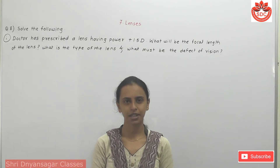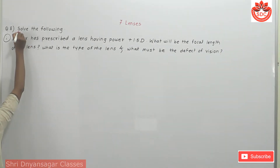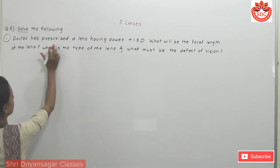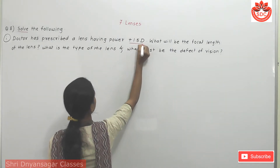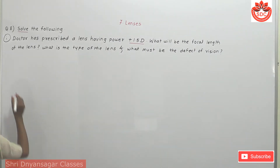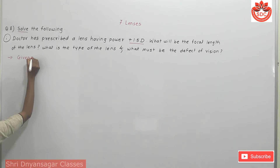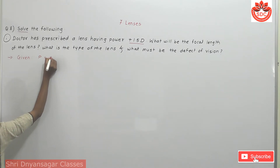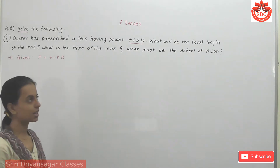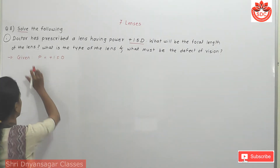Question number 8. Solve the following example. The first question: a doctor has prescribed a lens having power plus 1.5D. Given P is equal to plus 1.5D. We need to find the focal length of the lens.